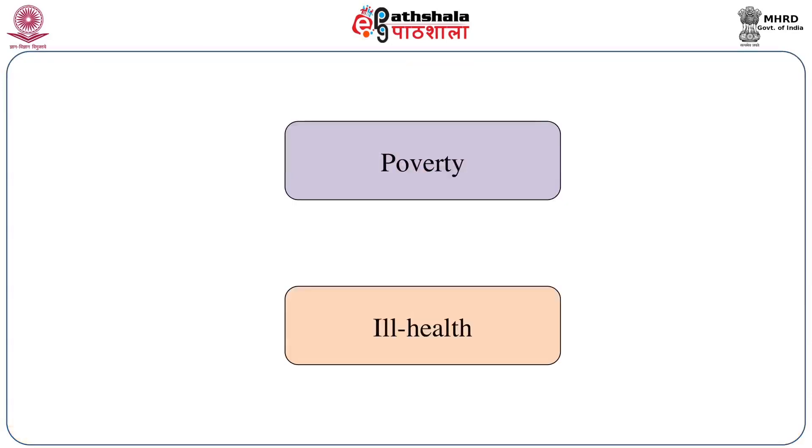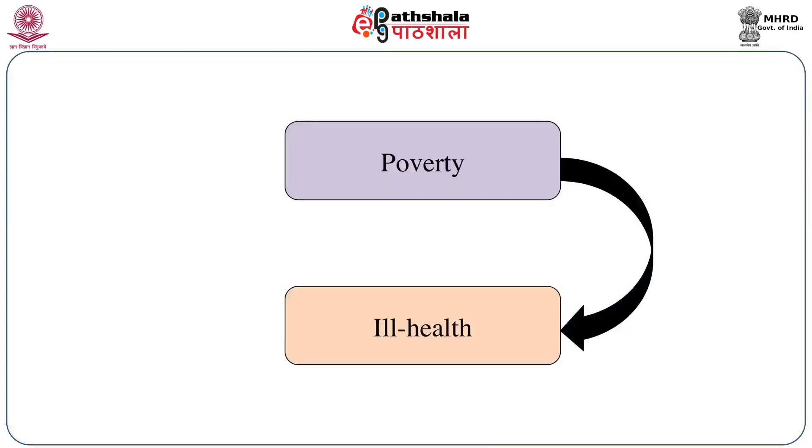Health is actually determined by social, political and economic factors. There is a direct correlation between poverty and ill health. If you look at third world countries, a large part of the poor people are affected with a large number of diseases and there is a higher proportion of health risk. Poverty actually causes ill health, and ill health increases the burden of poverty. So it is a vicious cycle — both actually feed into each other.